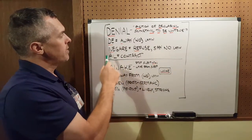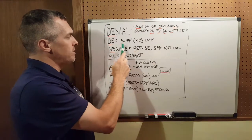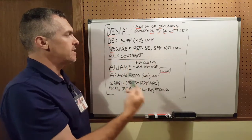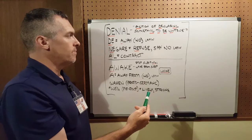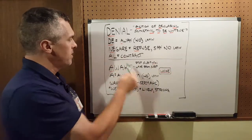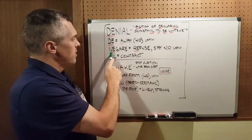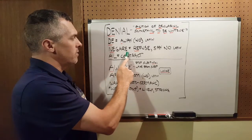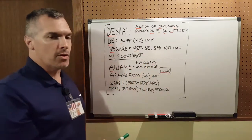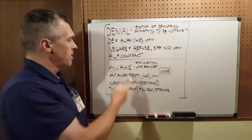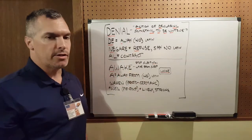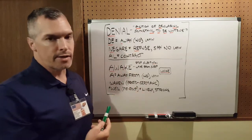When we pick the word apart, we see DE means no in Latin — it's a negative, defined as away from. The next part is negere, which means to refuse, to say no. And the last part, -eo, is a condition of, which is contract.